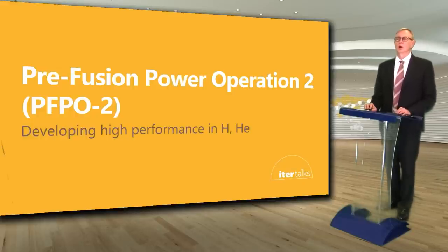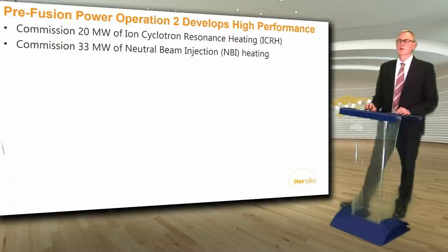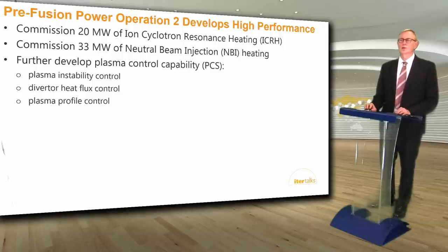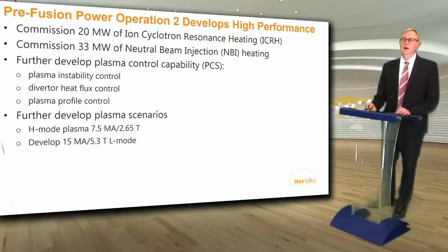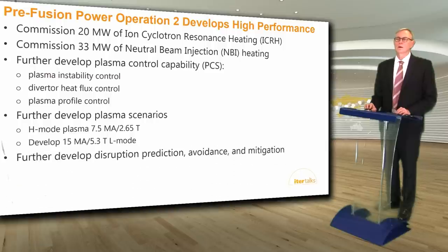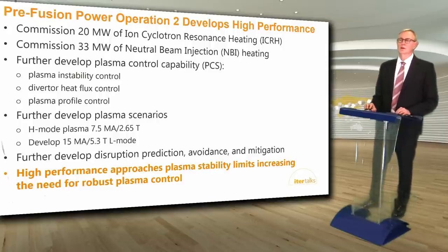Pre-fusion power operation two (PFPO2) will develop high performance plasmas in hydrogen or helium to avoid fusion reactions until high performance operation is well developed. PFPO2 will commission 20 megawatts of ion cyclotron and 33 megawatts of neutral beam heating. These new actuators are needed to develop much more plasma control capability, including plasma instability control, diverter heat flux control, and plasma profile control. The additional heating power will make H-mode operation possible at half field and current, and then plasma scenarios will be developed to full field and current in L-mode. High performance will approach plasma stability limits, increasing the need for robust plasma control.